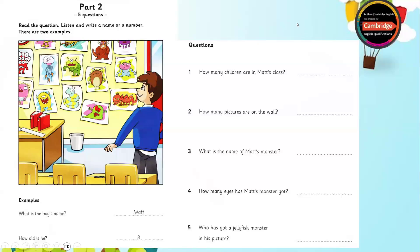Part 2. Look at the picture. Listen and write a name or a number. There are two examples.